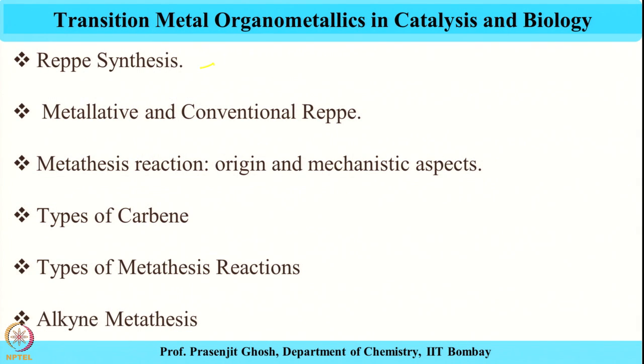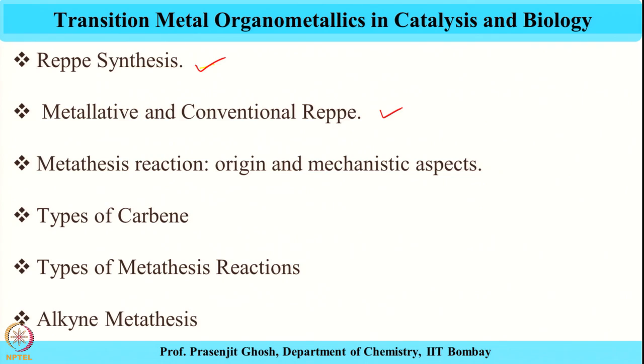Now I am going to summarize the topics covered across all 60 lectures in this course on Transition Metal Organometallics in Catalysis and Biology. We started with Reppe synthesis, followed by types of Reppe reactions — particularly metallative and conventional Reppe. The Reppe chemistry revolves around the utility of acetylene obtained from coal, expanding coal chemistry to various functional compounds and making value-added chemicals. These processes are of tremendous industrial importance and were mainly developed by Reppe while at BASF.